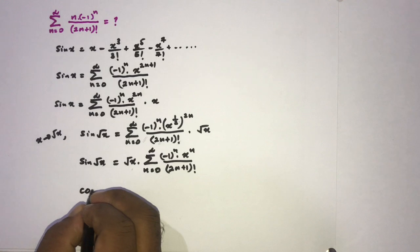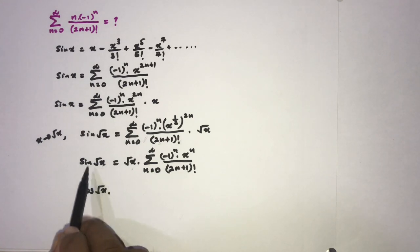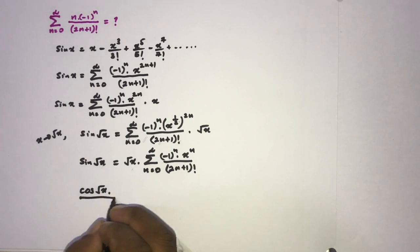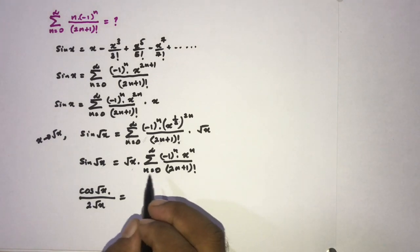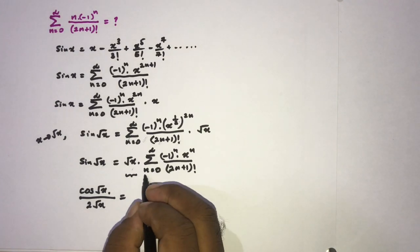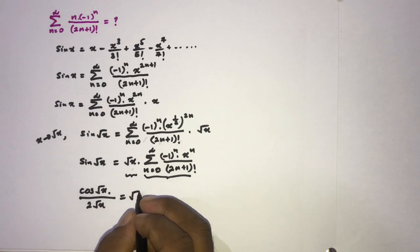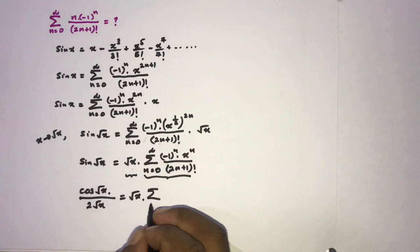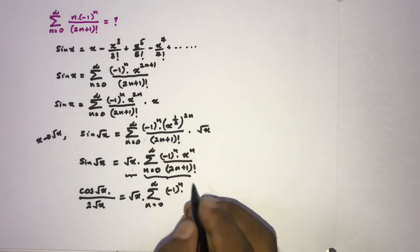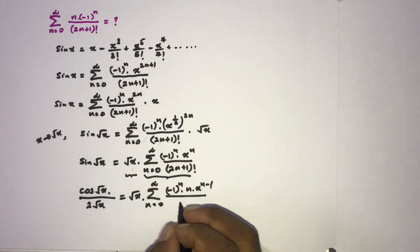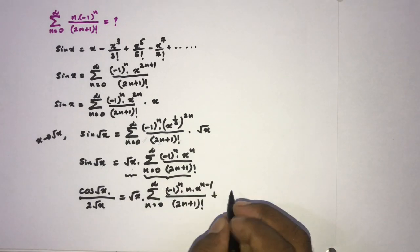Now I'm going to differentiate both sides with respect to x. The derivative of sin(√x) gives cos(√x) times, by the chain rule, 1 over (2√x). On the right-hand side we have a product of two functions, so we apply the product rule. The first function is √x and the second is the series. The derivative of the first times the second: √x times the sum from zero to infinity of (-1)^n times n times x to the (n-1) over (2n+1) factorial.